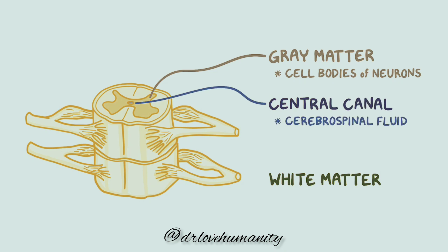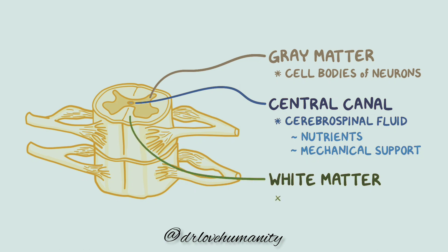Cerebrospinal fluid helps provide nutrients and mechanical support to the brain and spinal cord. Surrounding the gray matter is white matter, which consists of the axons of various neurons.